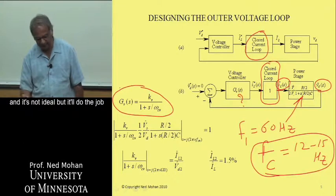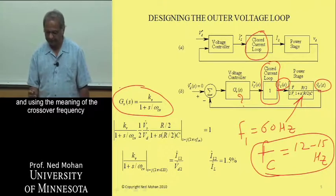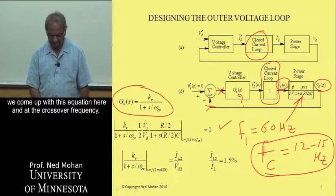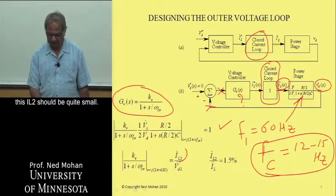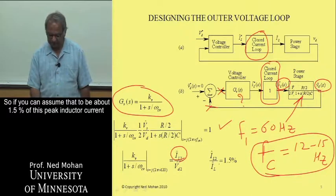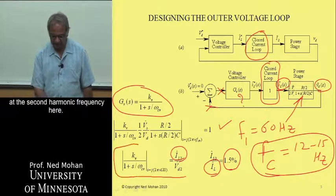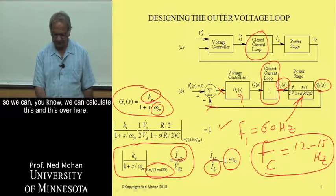We can get by with a controller transfer function of a particular form, which is not ideal but will do the job. Using the meaning of crossover frequency where the loop gain should be unity, we get one equation. At the crossover frequency, the perturbation at the second harmonic in the output, IL2, should be quite small — assumed to be about 1.5% of the peak inductor current at rated value — giving a second equation at the second harmonic frequency. With two equations and two unknowns, we can calculate the controller parameters.